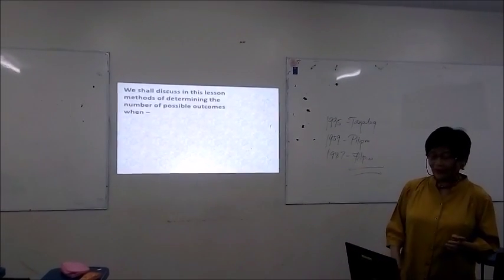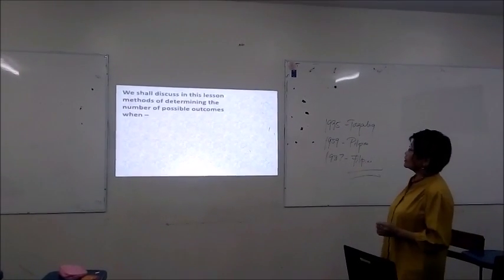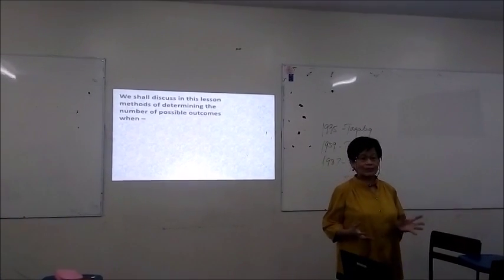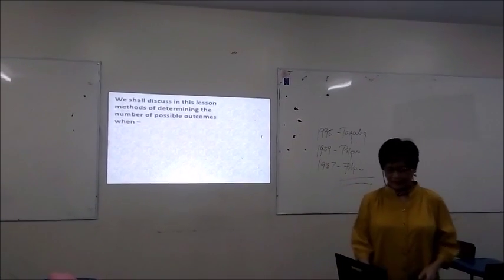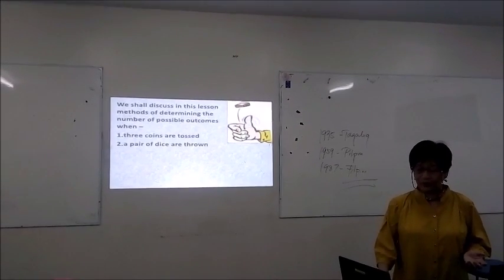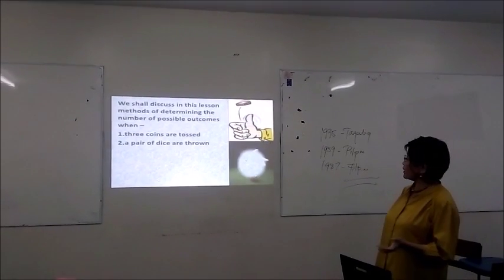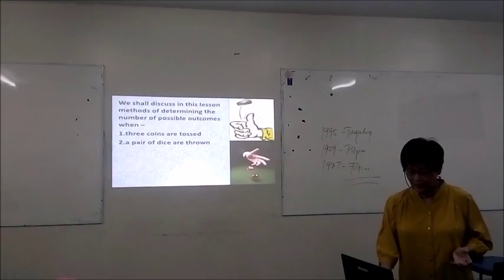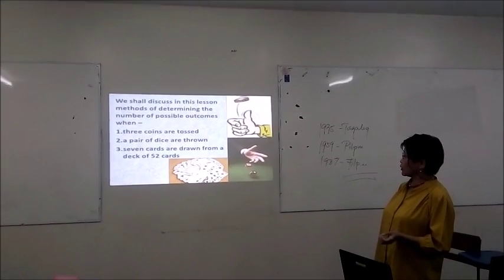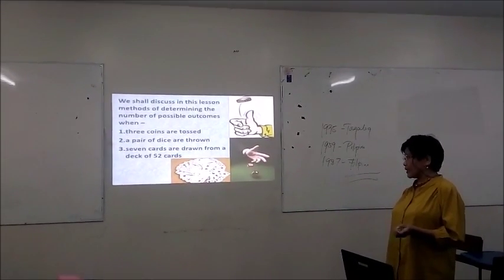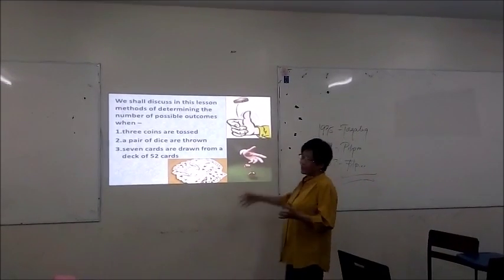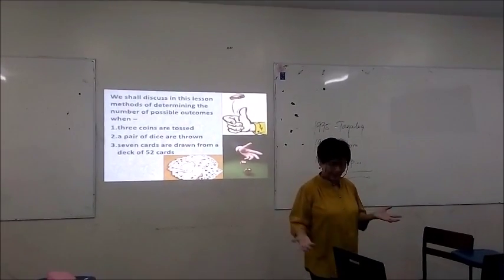We will discuss in this lesson methods of determining the number of possible outcomes when: number one, three coins are tossed; number two, a pair of dice are thrown; number three, seven cards are drawn from a deck of 52 cards. You will notice that these are activities that you will see in a gambling casino.